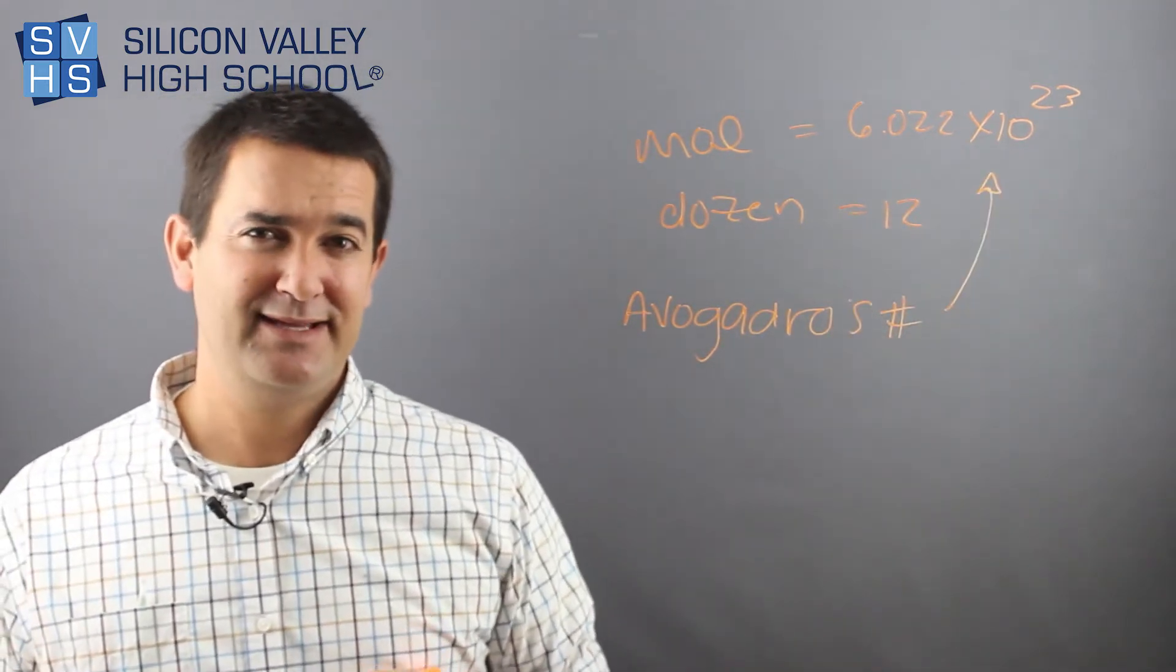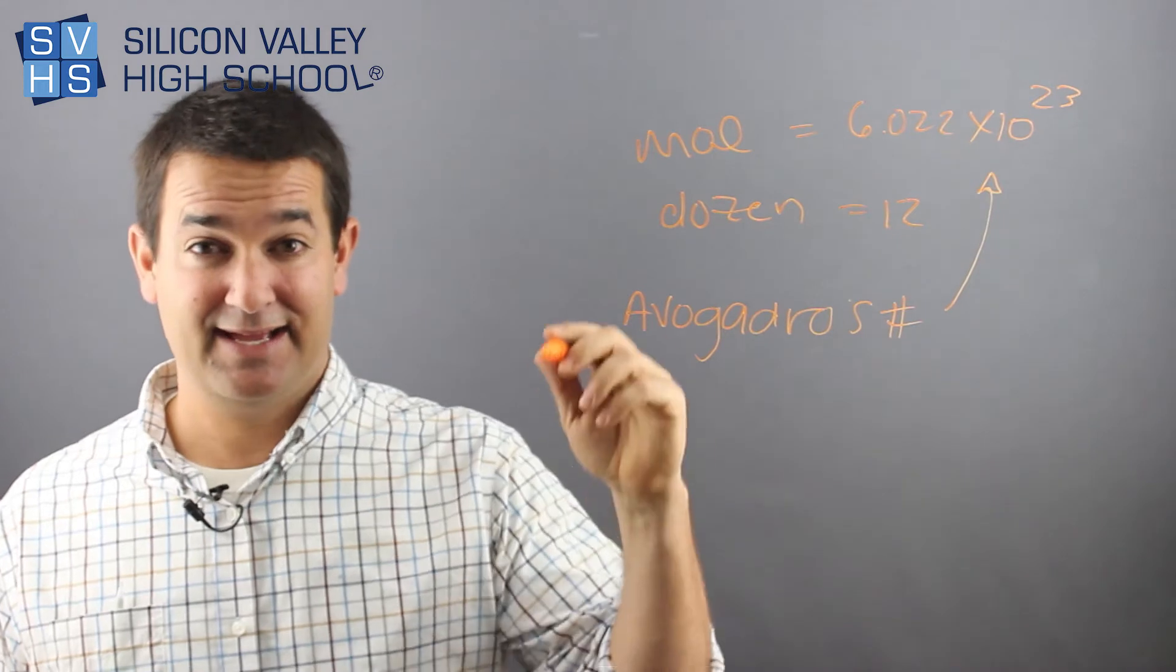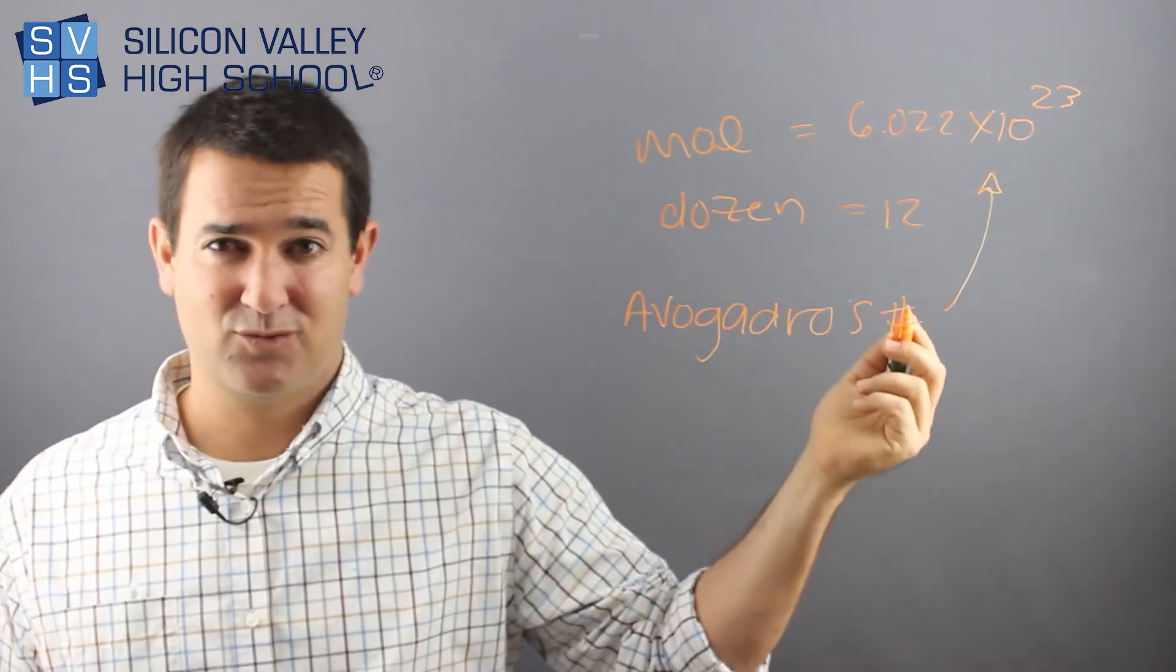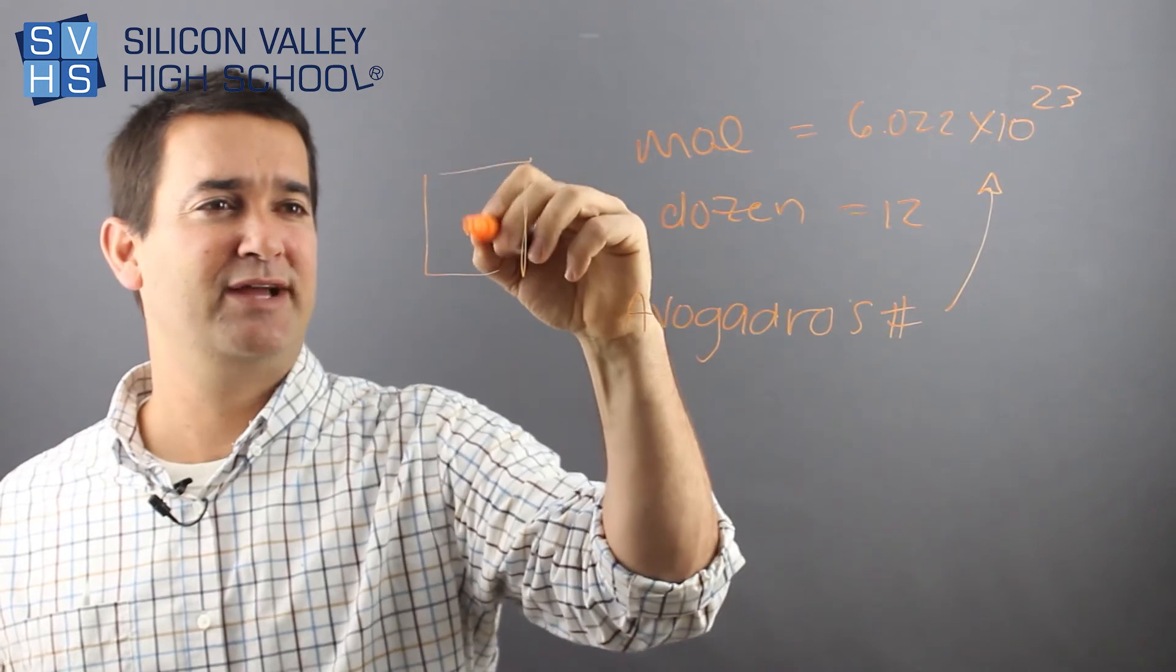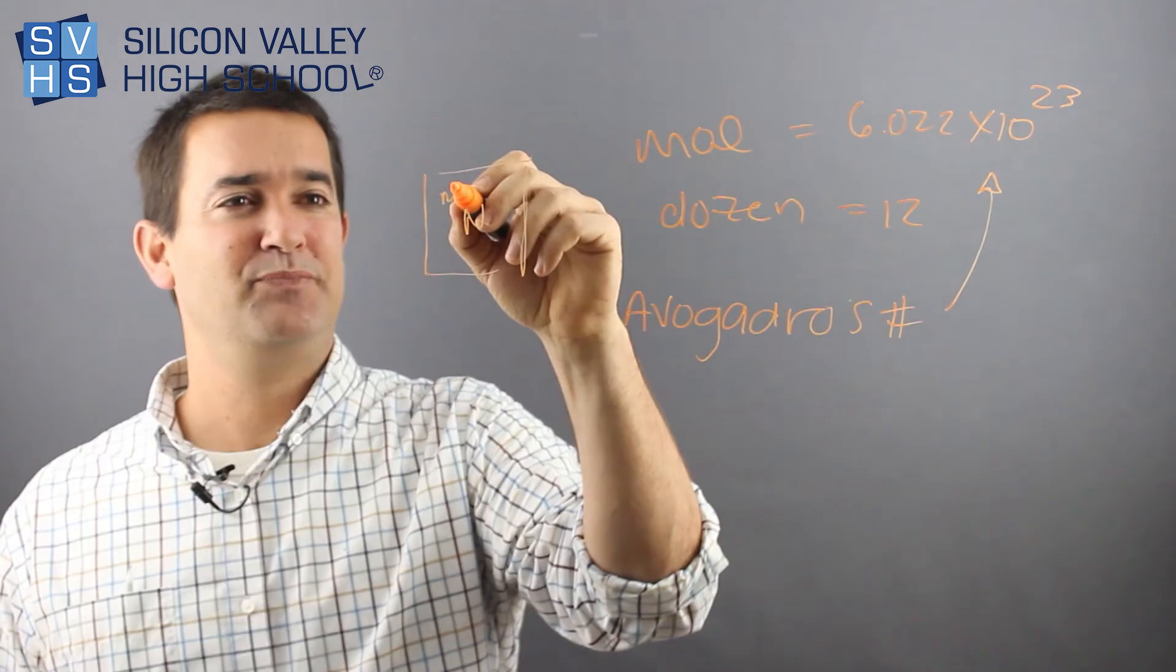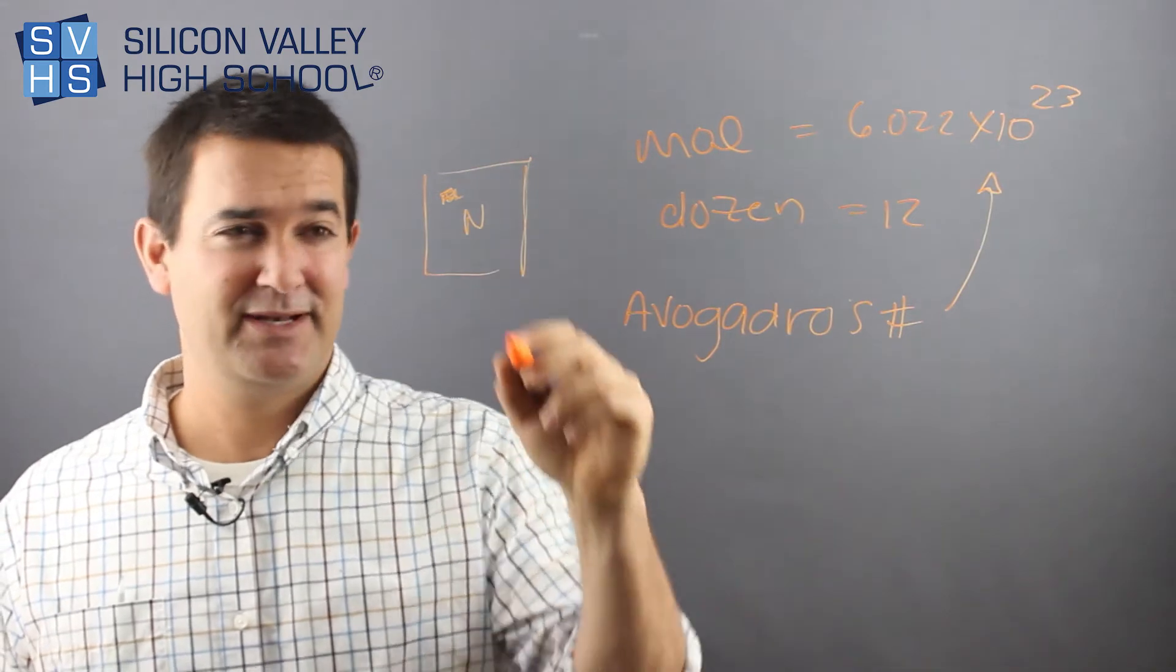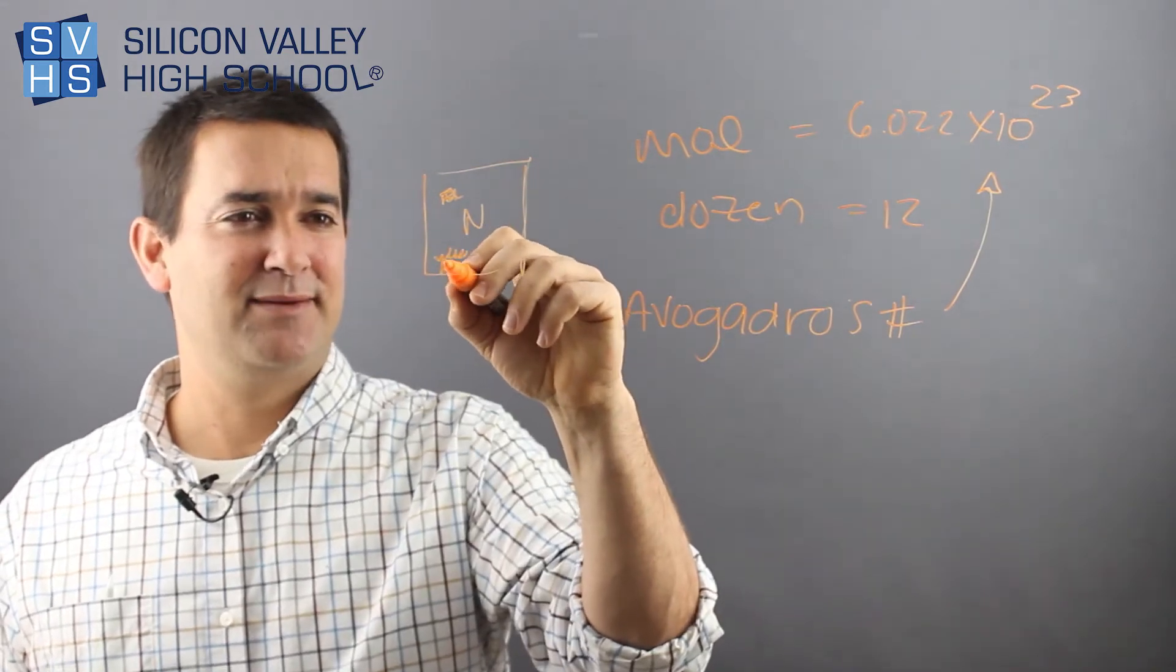And the reason that comes into play in chemistry so often is that, again, like I said, when they give you a molecular weight of something, so they'll have, like, oh, whatever, you know, you'll have nitrogen. And you'll have the number up here, some number of protons, the atomic number. And then they'll give you some mass number down here.